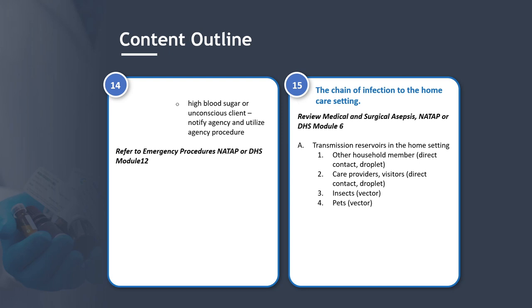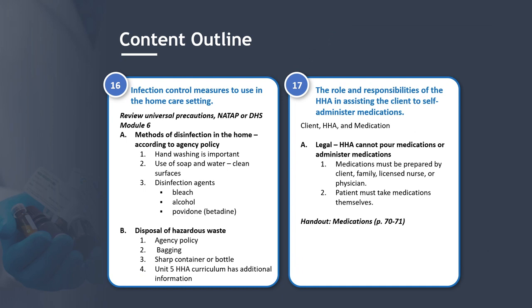Section 15: The Chain of Infection in the Home Care Setting — review medical and surgical asepsis from NATAP or DHS Module 6. Transmission reservoirs in the home setting include other household members via direct contact or droplet, care providers and visitors via direct contact or droplet, insects as vectors, and pets as vectors. Section 16: Infection Control Measures in the Home Care Setting — review universal precautions from NATAP or DHS Module 6. Methods of disinfection according to agency policy include handwashing and use of soap and water to clean surfaces. Disinfection agents include bleach, alcohol, and povidone or betadine. Disposal of hazardous waste follows agency policy through bagging and use of sharps containers or bottles. Unit 5 of the Home Health Aide Curriculum has additional information.